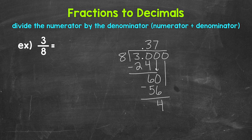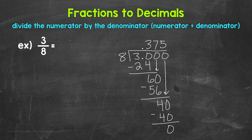Subtract: 60 minus 56 is 4. So we still don't have that clean-cut zero, so we can use another zero that we can bring down in order to continue on. Now we have 40 — 40 divided by 8. That gives us 5. We multiply: 5 times 8 is 40. Subtract: 40 minus 40 is 0. So we have that clean-cut zero at the bottom and nothing else to bring down, so we are done. 3 eighths equals 375 thousandths.